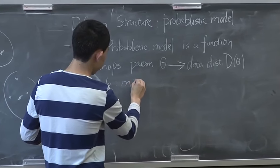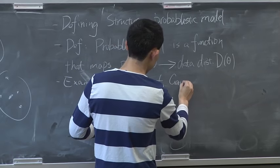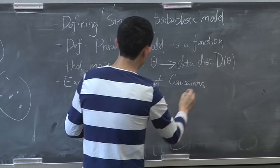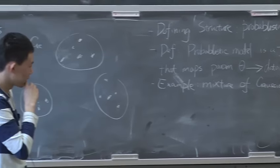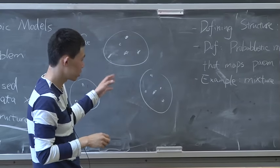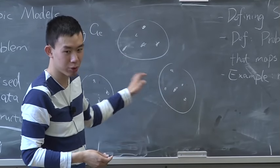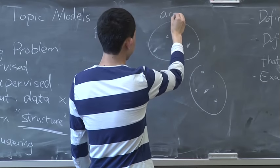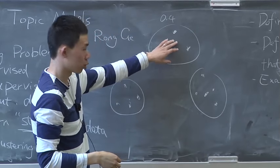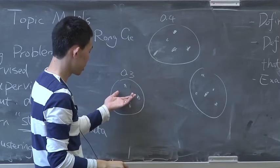The Gaussian problem is a bit too simple, so let's look at a more complicated example called a mixture of Gaussians. In a mixture of Gaussians, the data points come from one of k Gaussians. Here k equals 3. With some probability — say 0.4 — the data point will be generated according to one Gaussian, and maybe with 0.3 probability from another Gaussian.